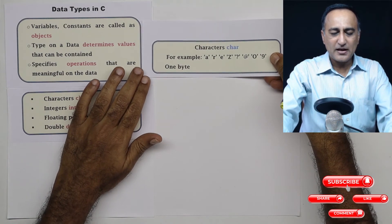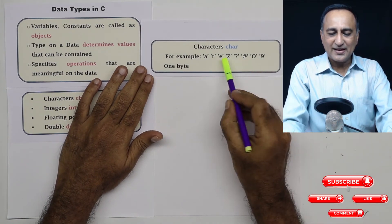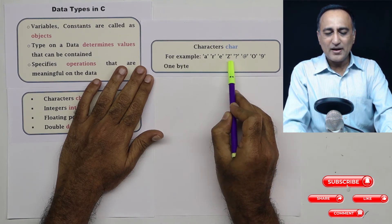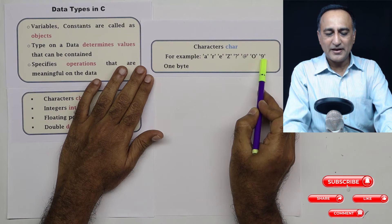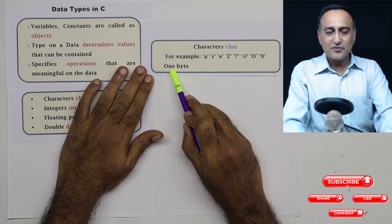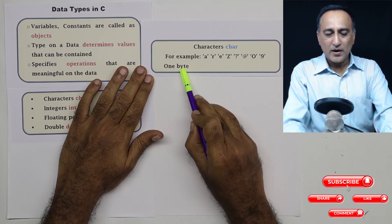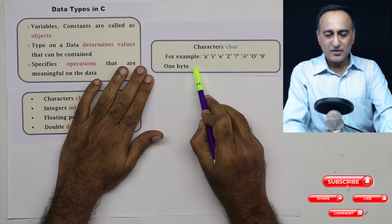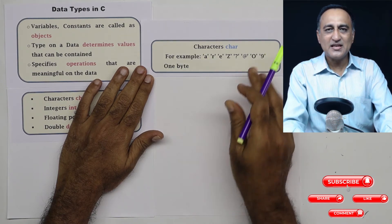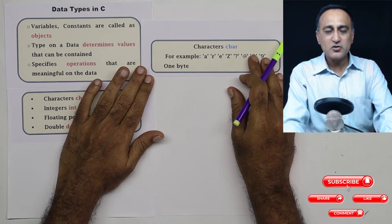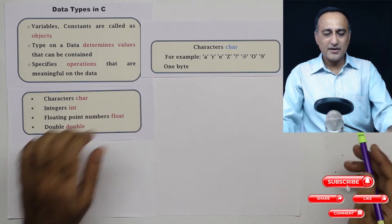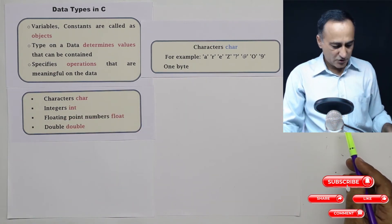The first data type is character or char. Character types of data always occupy one byte, that is 8 bits of memory. They're always enclosed in single quotes. If you enclose in double quotes, it's a totally different thing called strings. Be careful that characters are enclosed only in single quotes.